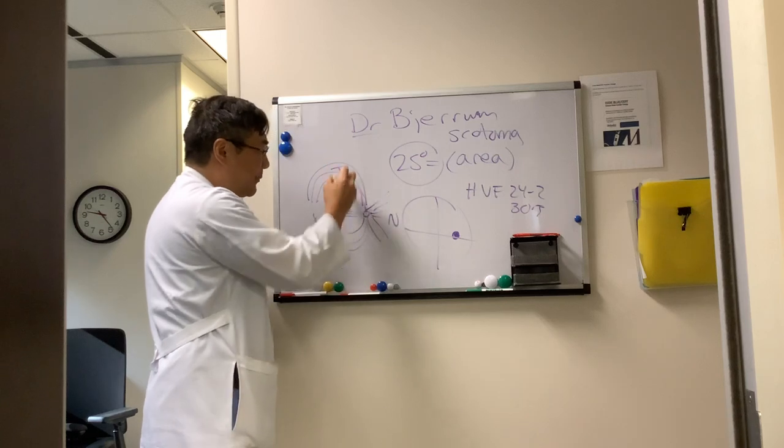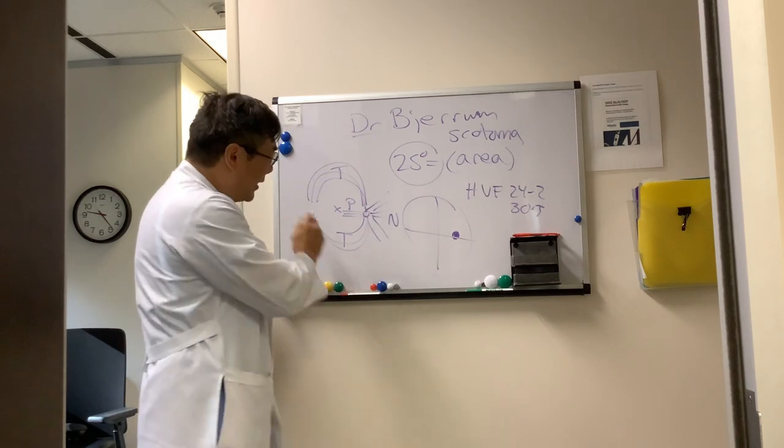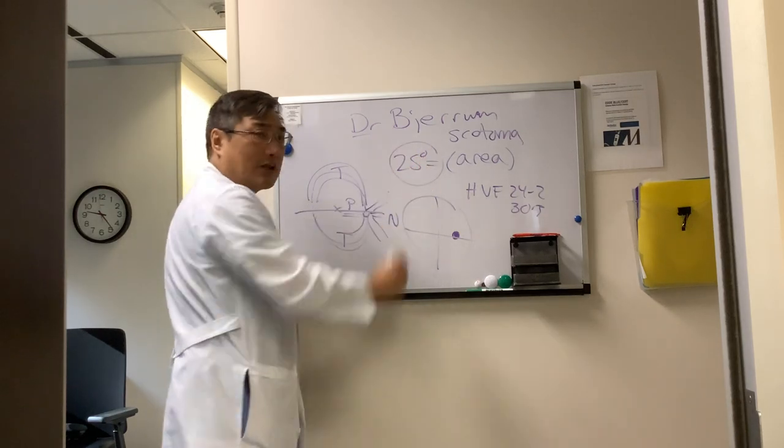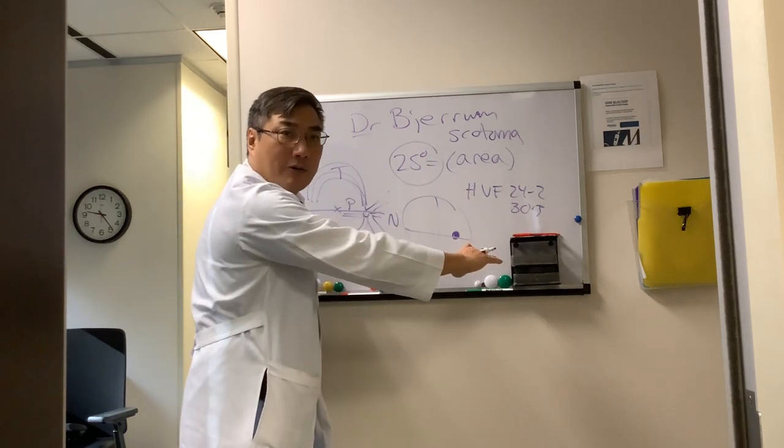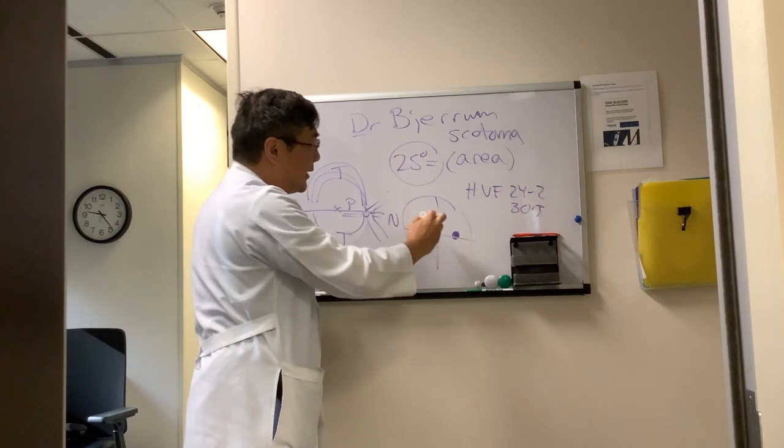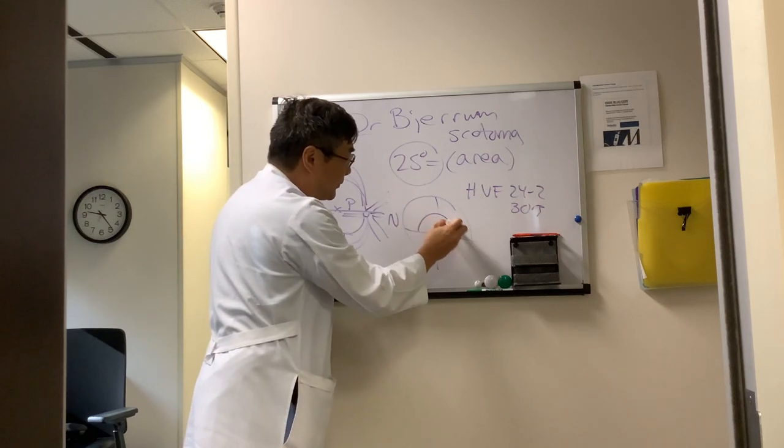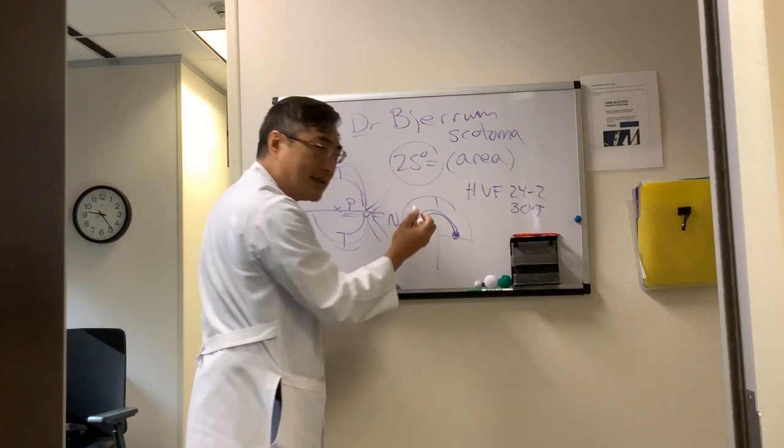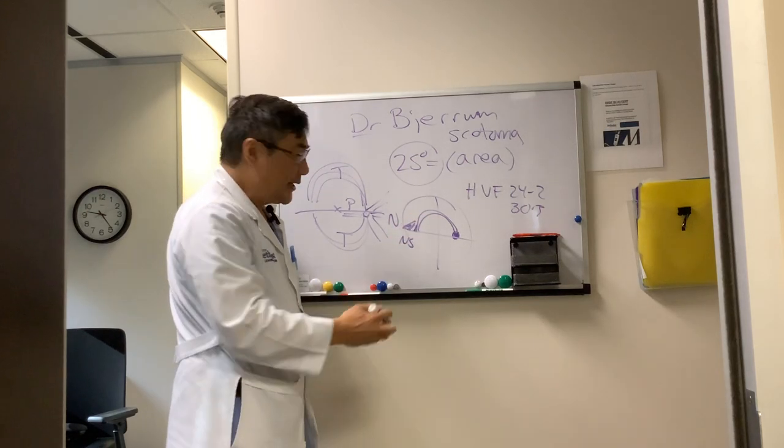So these are nasal fibers, temporal fibers, and papillomacular bundle. Because those fibers respect the horizontal meridian, Bjerrum scotomas respect the horizontal meridian. The most common is an arcuate scotoma, which usually starts off as a nasal step, and that's the most common field defect we see in glaucoma.